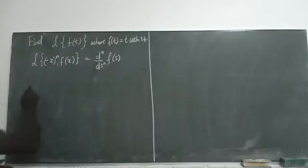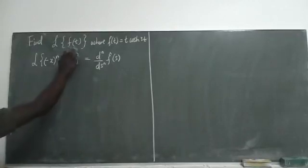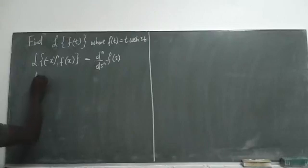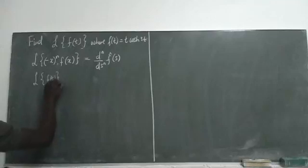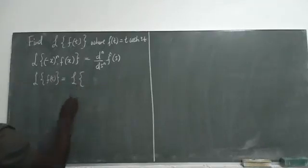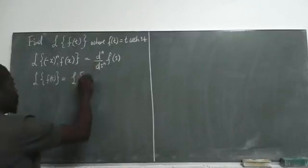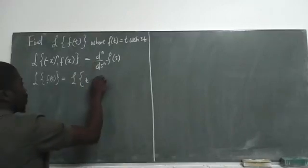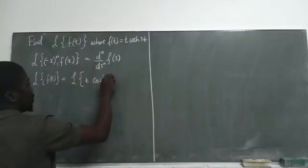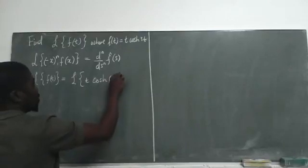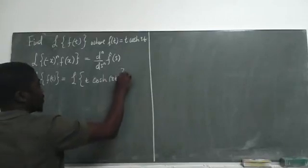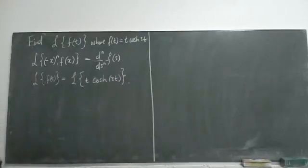So let's start off with our problem. On the left hand side we're going to have the Laplace transform of the function t, which we are required to find, is equal to the Laplace transform of t·cosh(3t).